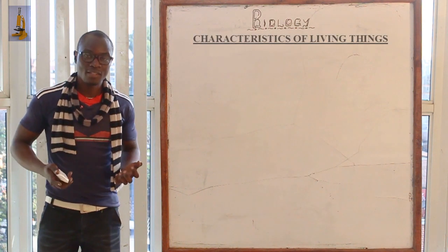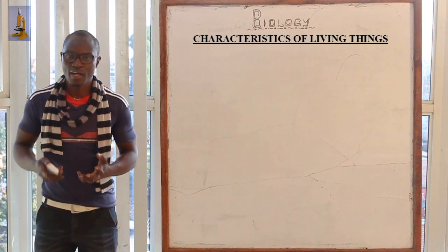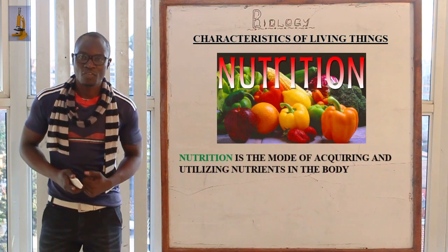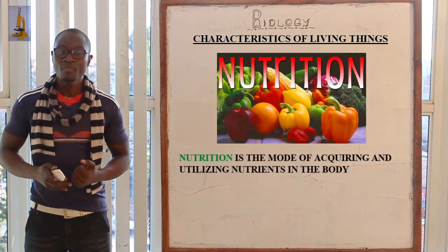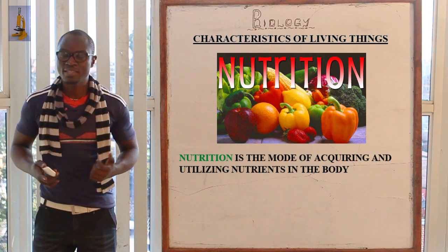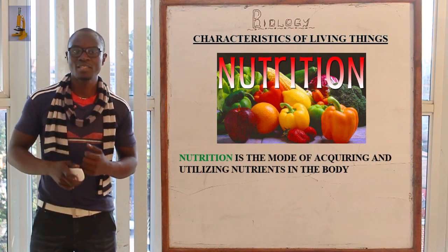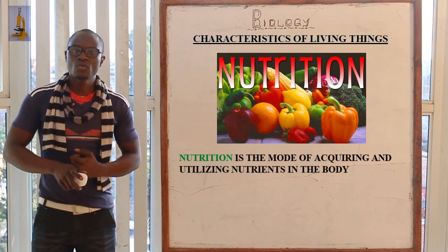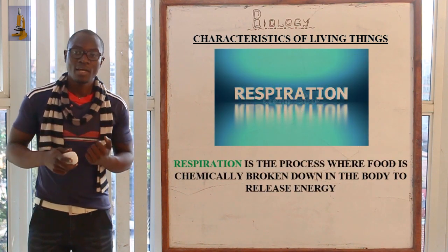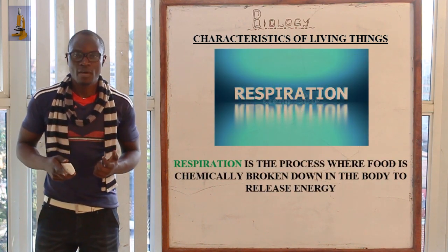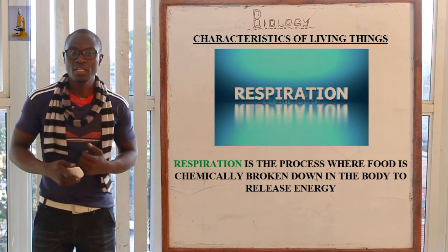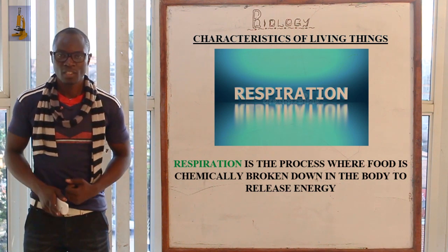Now let's look at the characteristics of living organisms. The first characteristic is nutrition, which is the mode of acquiring and utilizing nutrients in the body. The other characteristic is respiration, which is the process where food is chemically broken down in the body to release energy.